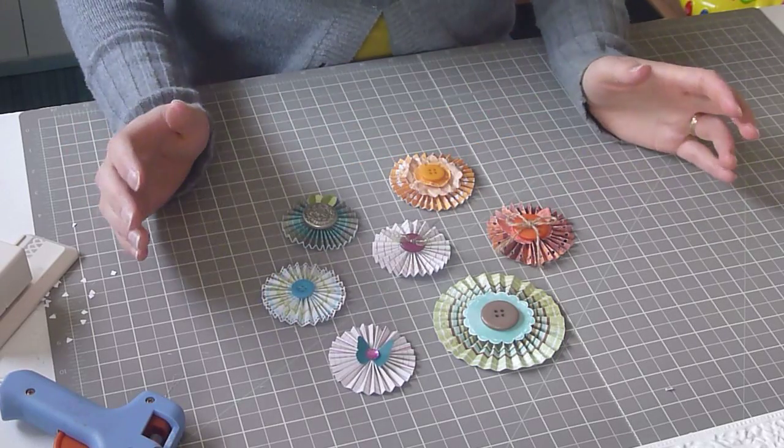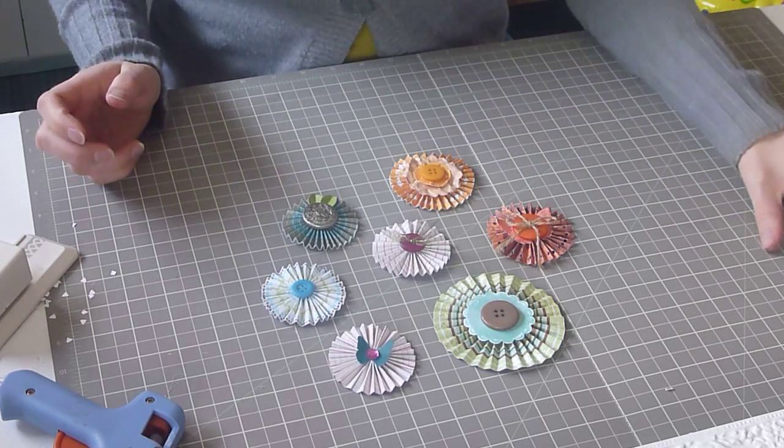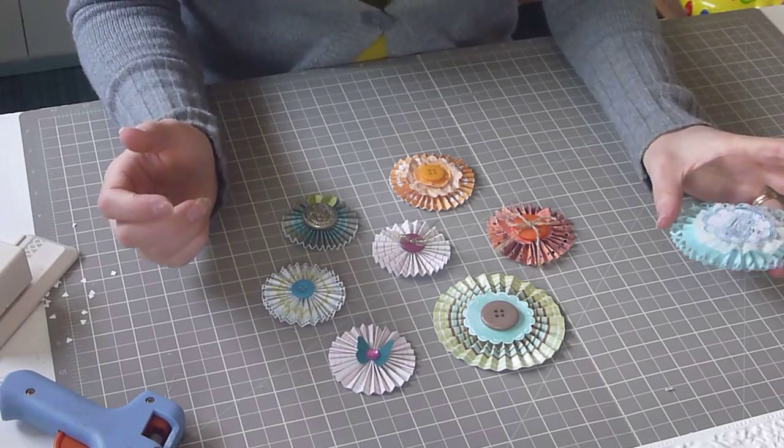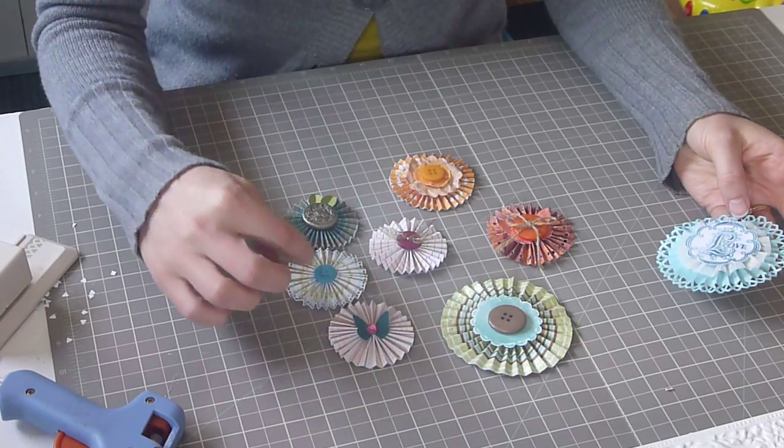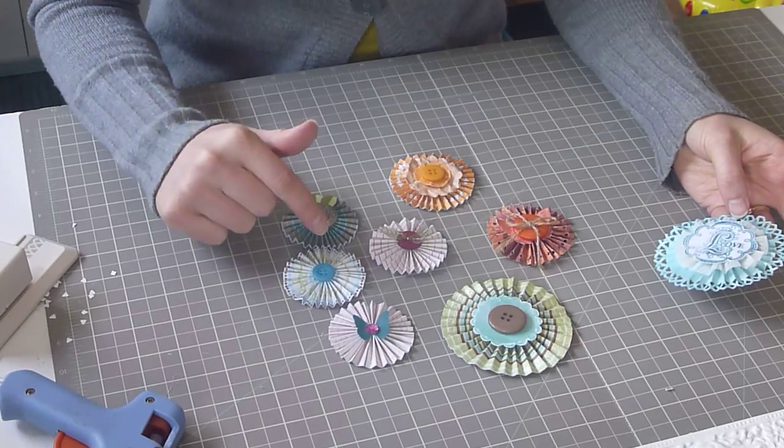Now you can make them as large or small as you want. Here's a huge one. And you can put them on your page. Put stems on them. Make them flowers. Or use half of one.